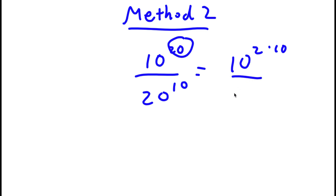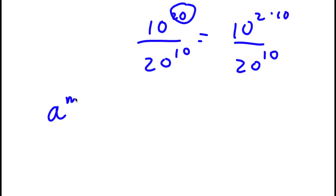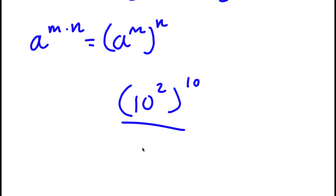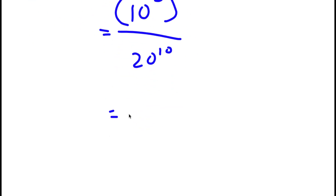I have this over 20 to the power of 10. Now if I have something in the form a to the power of m times n, this is equal to a to the power of m to the power of n. So 10 to the power of 2 times 10 is going to equal 10 to the power of 2 to the power of 10, and I have this over 20 to the power of 10. Now 10 to the power of 2 is 100, so now I have 100 to the power of 10 over 20 to the power of 10.